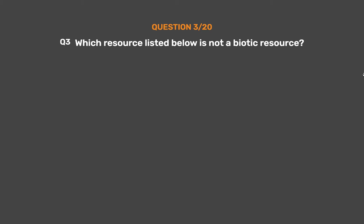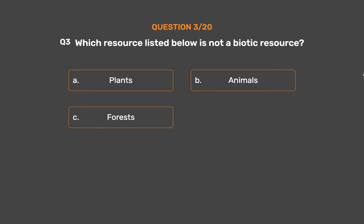Question No. 3. Which resource listed below is not a biotic resource? Option A: Plants. Option B: Animals. Option C: Forests. Option D: Soil.